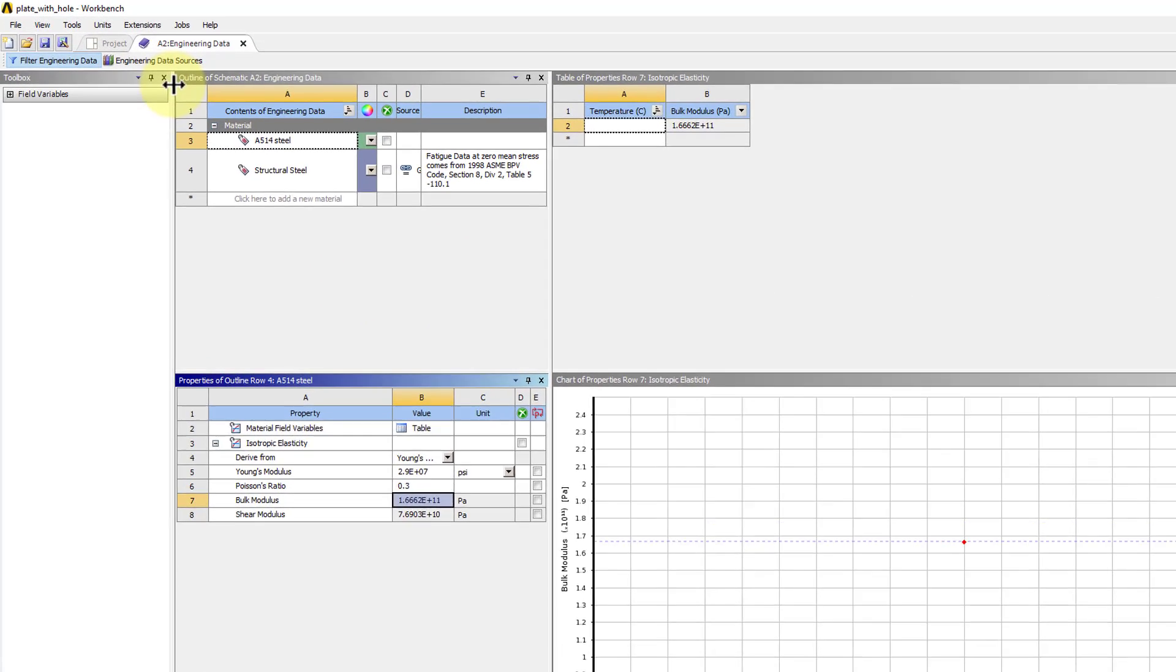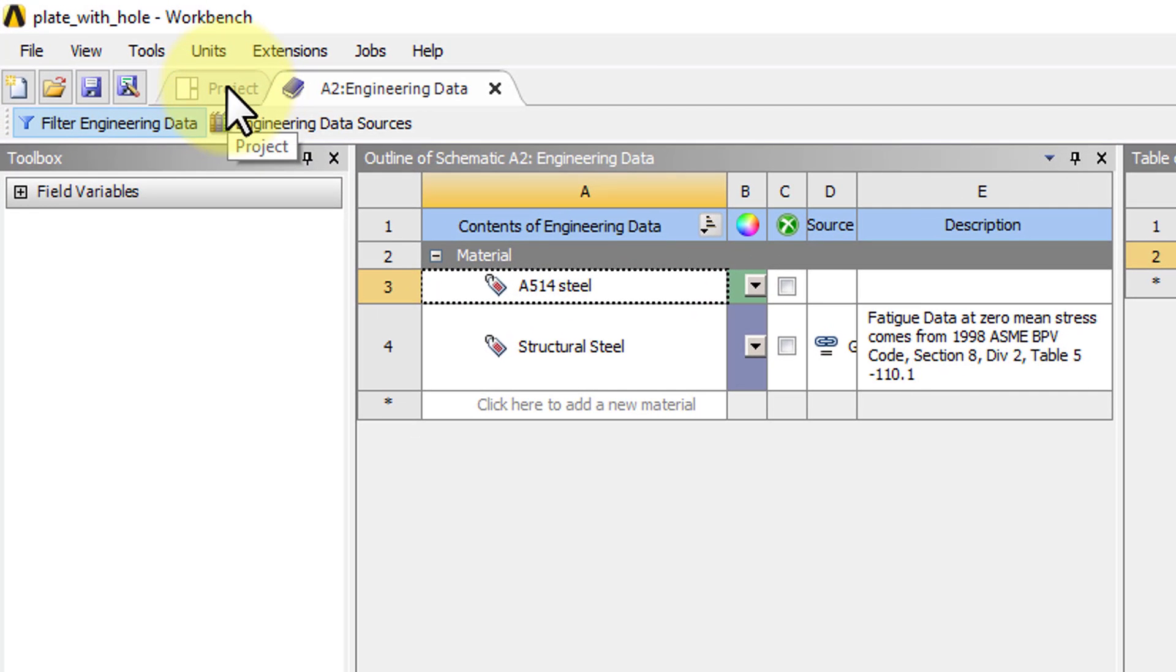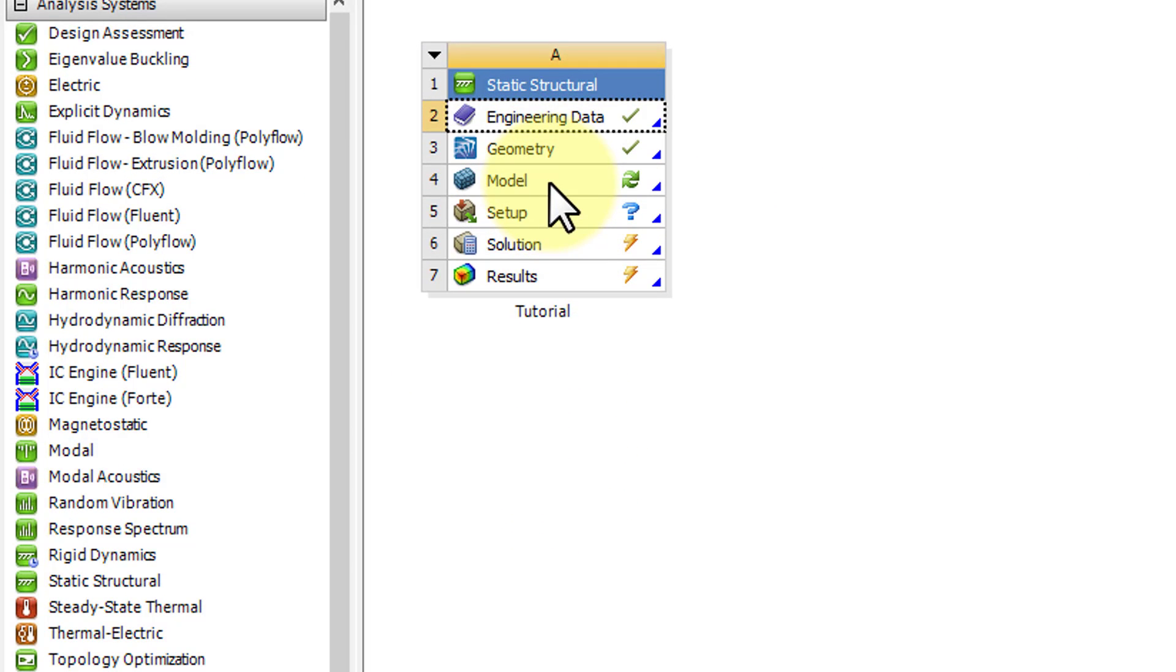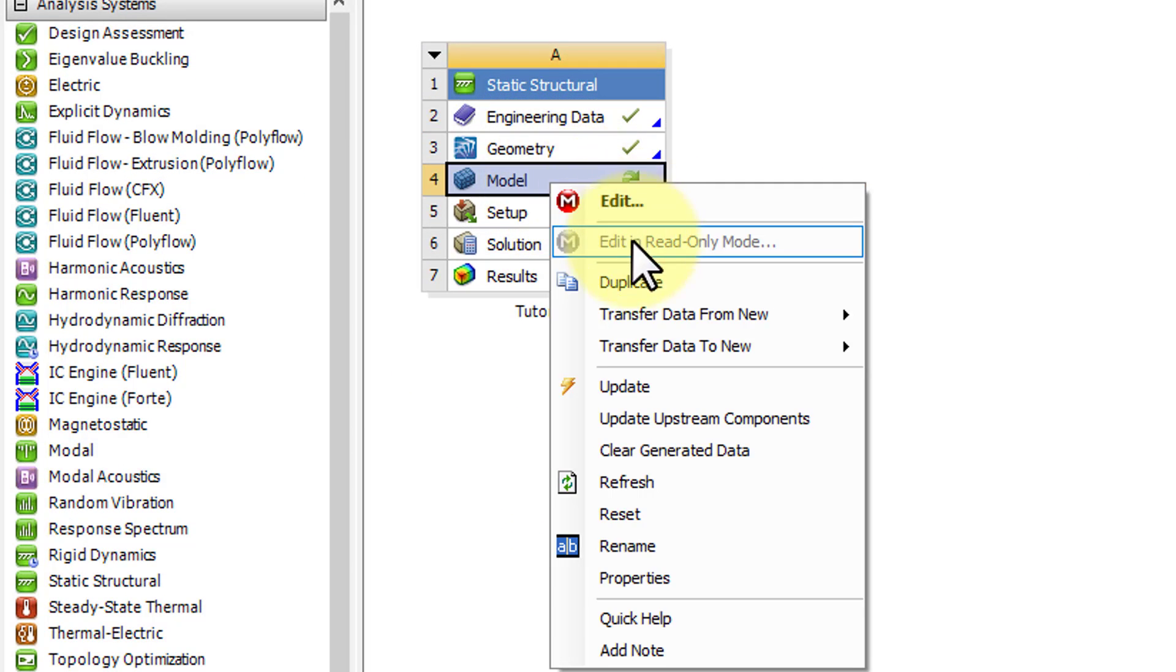So we have to go do that. That's easy to forget. So I have to go to the project page, and I'll right-click on Model and say Refresh.